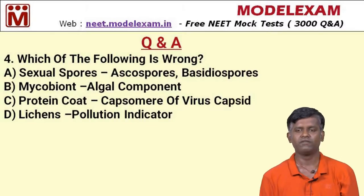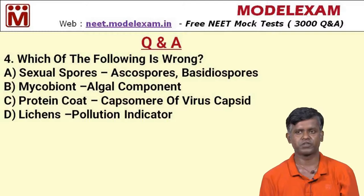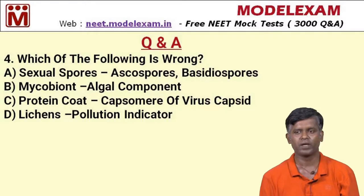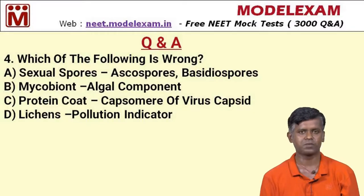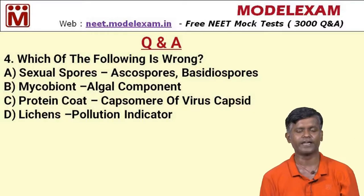Question number four: which of the following is wrong? Option A: sexual spores are ascospores and basidiospores. Option B: mycobiont corresponds to the algal component. Option C: protein coat corresponds to capsomeres of the virus capsid. Option D: lichens correspond to pollution indicators.